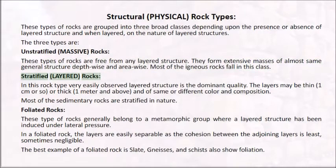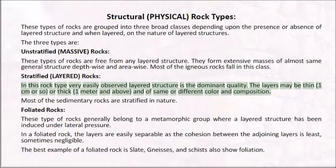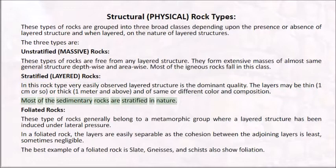Stratified Layered Rocks: in this rock type, a very easily observed layered structure is the dominant quality. The layers may be thin (1 cm or so) or thick (1 m and above), and of the same or different color and composition. Most sedimentary rocks are stratified in nature.